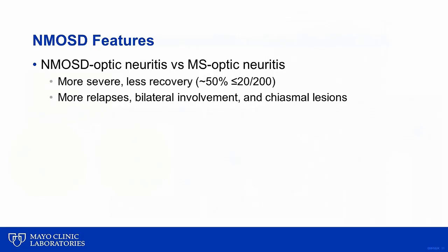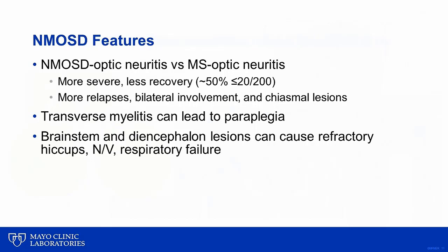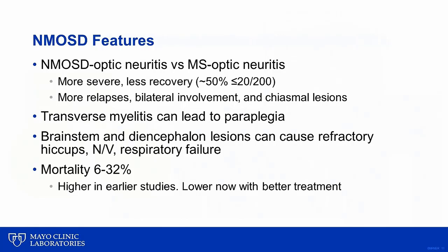Optic neuritis from NMOSD tends to relapse more commonly, affect both eyes, and also affect the chiasm. Transverse myelitis can lead to paraplegia. Brainstem and diencephalon lesions can cause hiccups, nausea, vomiting, and respiratory failure. Mortality rates can range between 6% to 32%, with higher numbers from earlier studies. Now that we have better treatments, the mortality rates have been improving, but it can be a fatal disease.